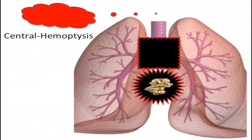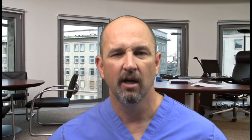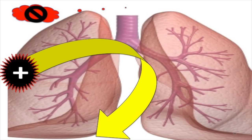Squamous cell cancer and oat cell cancer are both central — they'll spit up blood, so both have hemoptysis. Adenocarcinoma is peripheral and does not. Adenocarcinoma is always the cell you pick on boards if you're not sure what cancer is most common. It has no hemoptysis and likes to metastasize to the liver — that's why it has such a poor prognosis; patients come in late.